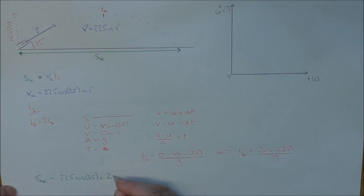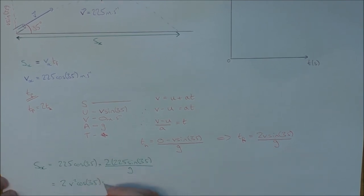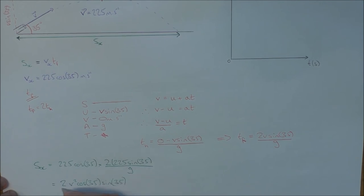...by 2V being 225 sine 35, and that's all over g. What I can effectively do here is notice that I've got V cos 35 and V sine 35, so I can rewrite that as 2V squared cos 35 sine 35, and that's all over little g.